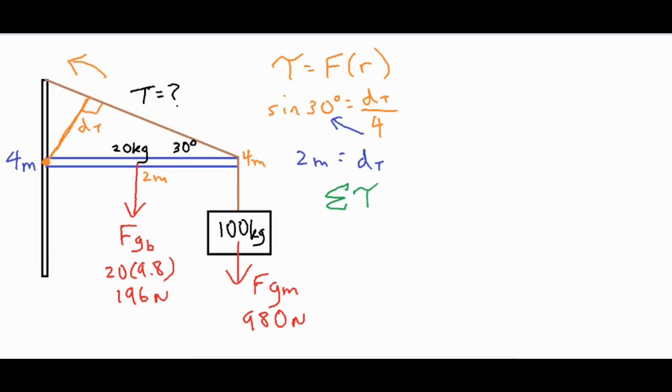So let's go ahead and sum up the torques acting on the beam. Now we have the torque of our hanging mass plus the torque of the beam being counteracted by the torque of the cable that is providing the tension and we're going to solve for that T as our final solution. So let's go ahead and put in our forces and our lever arms and let's solve for that force of tension.